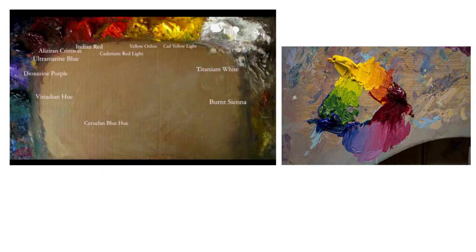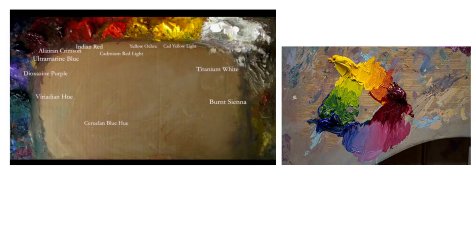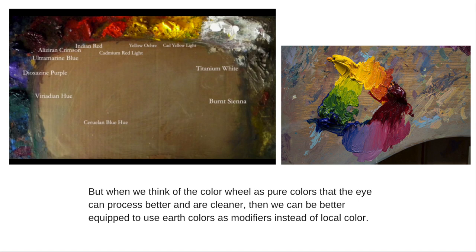I'm not saying you shouldn't use earth colors — many artists use them very effectively. But when we think of the color wheel as pure color that the eye can process better, we can use earth colors as modifiers instead of always trying to mix local color directly. You can mix the whole color wheel with just a yellow, blue, and red. Starting with cadmium yellow light, alizarin crimson, and ultramarine blue, doing small studies teaches you a lot about color mixing and produces cleaner, more identifiable color.